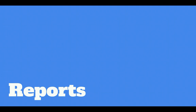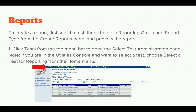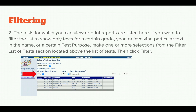Once your students have taken tests, you'll want to look at those formative assessments — are there particular items you need to revisit? To create reports, first select a test, then choose a reporting group and reporting type from the Create Reports page. You can preview the report and go back to change preferences. Click Tests from the top menu bar to open the Select Test Administration page, or if in the Utilities console, select a test and choose Select a Test for Reporting. You can also filter by entering your test name to pull up that specific test.